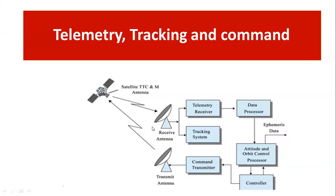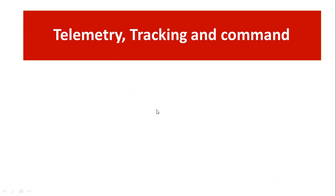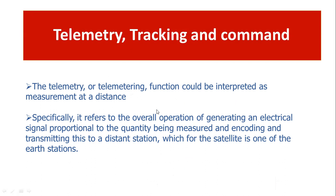First of all, what is meant by telemetry? Telemetry, or telemetering, can be interpreted as measurement at a distance — how we measure how far the satellite is rotating, whether it is in the correct position in the geostationary orbit or not. As discussed earlier, when the satellite is rotating in geostationary orbit, many influencing factors and disturbances can cause the satellite's position to shift, and that can be recognized using telemetry tracking.